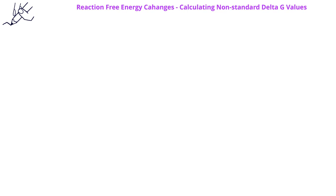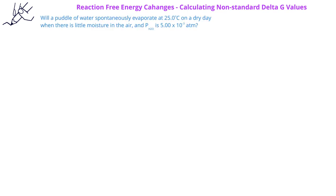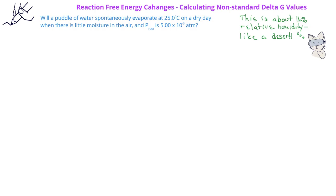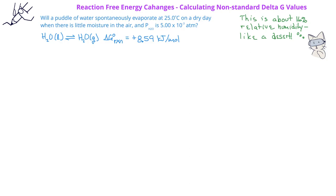Let's look at an example to help explain why a puddle of water might evaporate. We'll ask: will a puddle of water spontaneously evaporate at 25 degrees Celsius on a dry day when the vapor pressure of the water is 5.00 times 10 to the negative third atmospheres? We'll recall that the equilibrium between liquid water and water in the gas phase has a standard free energy change of positive 8.59 kilojoules per mole. We'll notice that the pressure of the gas is not equal to 1 atm pressure.